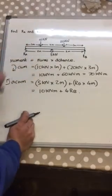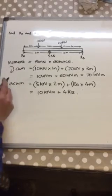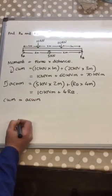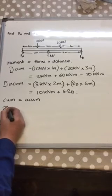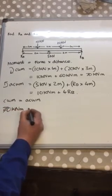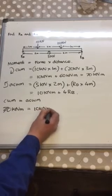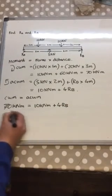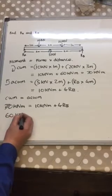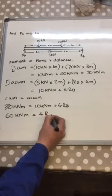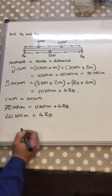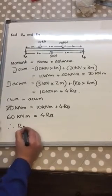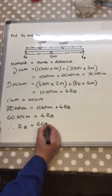Because this beam is stationary and not moving or rotating, the clockwise moment must be equal to the anti-clockwise moment. So we can say 70kN·m is equal to 10kN·m plus 4Rb. We transpose this equation, so 70 minus 10 will be 60kN·m is equal to 4Rb. Then if you divide by 4, you'll be left with Rb is equal to 15kN.